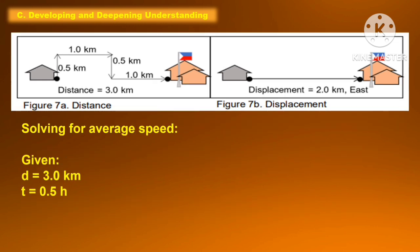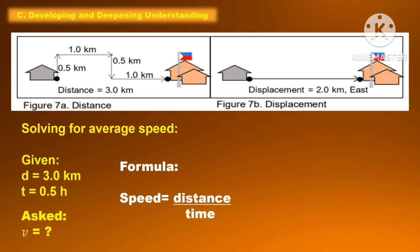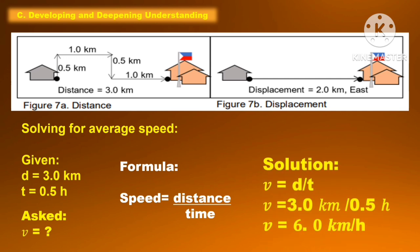To solve for the average speed, we use the formula: speed equals distance divided by time. The given in this problem is distance equal to 3.0 km and T equal to 0.5 hour. Substituting into the formula, V equals 3.0 km divided by 0.5 hour. The average speed is equal to 6 km per hour.